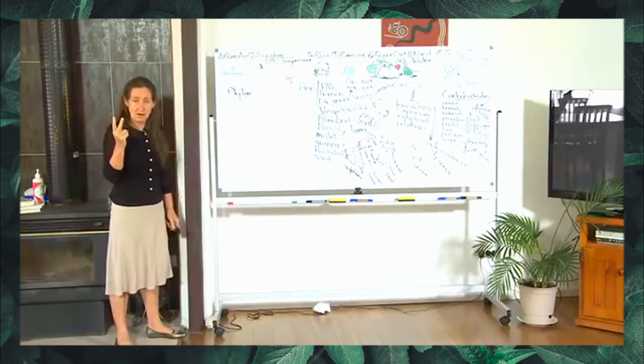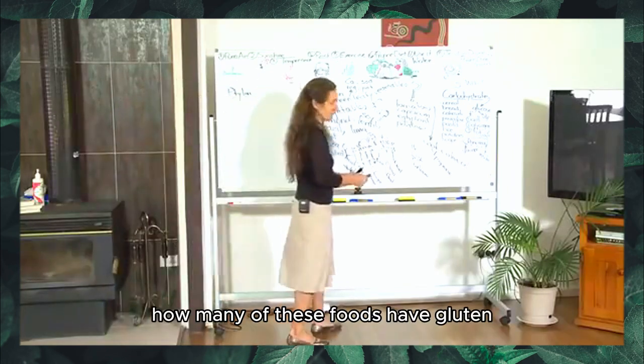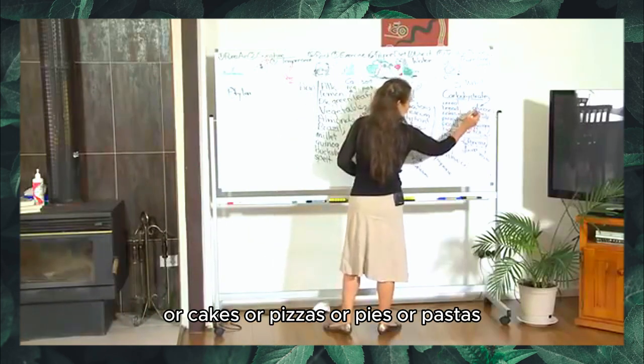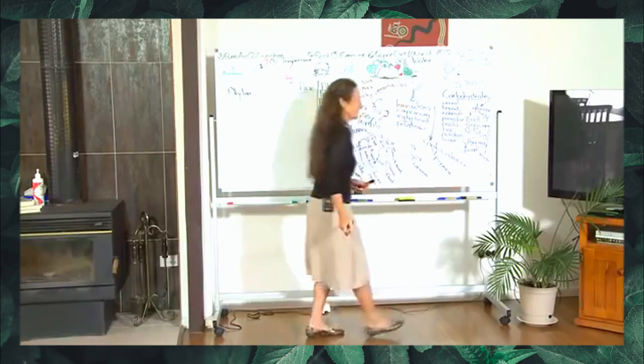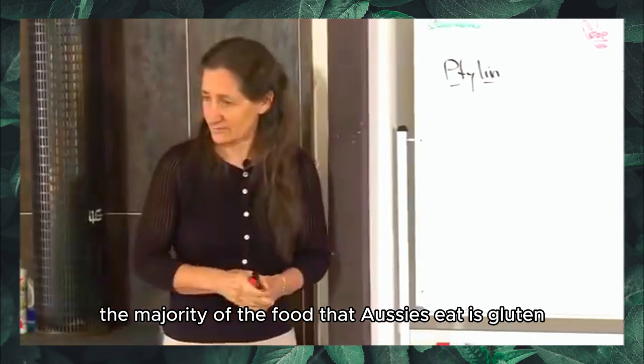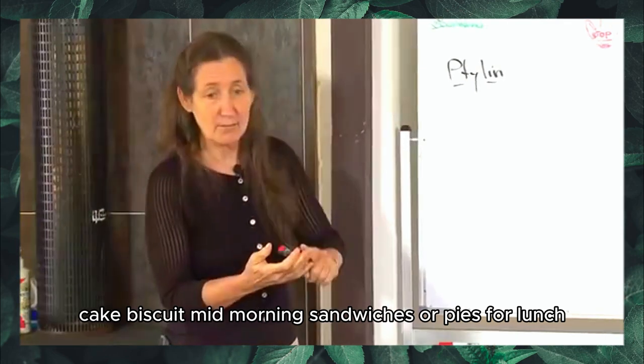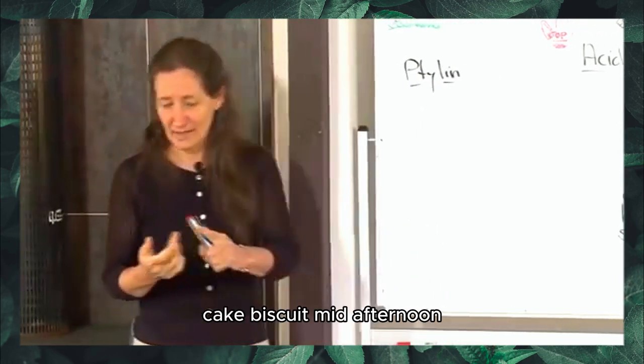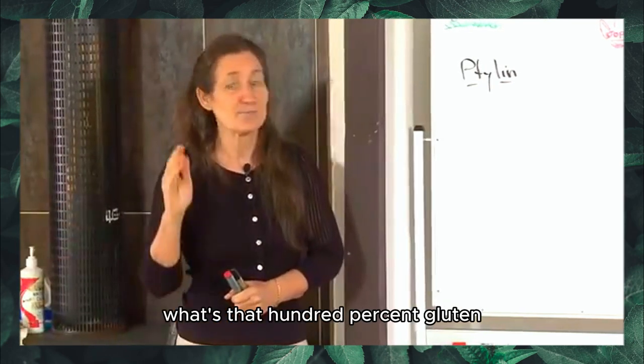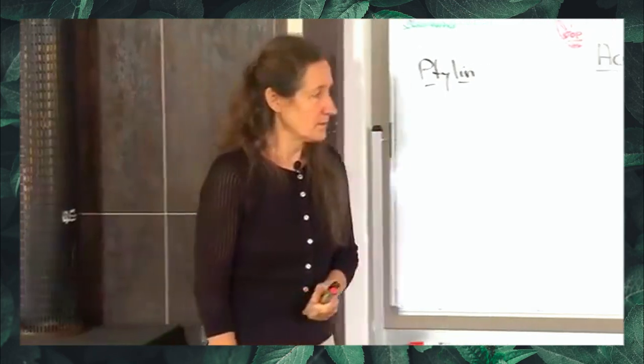Number two, Aussies overdo gluten. Let's have a look at how many of these foods have gluten. Most cereals or breads or cakes or pizzas or pies or pastas. The majority of the food that Aussies eat is gluten. Let's have a look. Weetbix and toast for breakfast, cake biscuit mid-morning, sandwiches or pies for lunch, cake biscuit mid-afternoon, pasta, pizza for tea. What's that? 100% gluten. It's just overdoing the gluten.